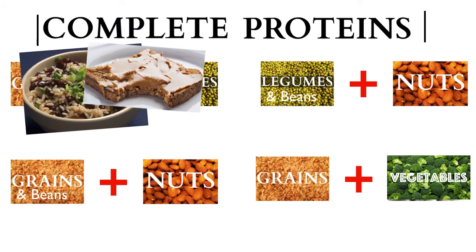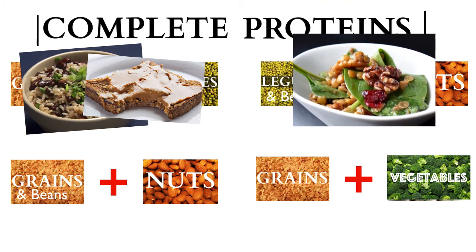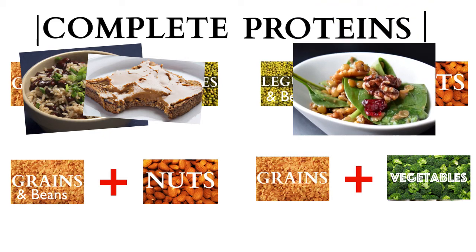Alternatively, a simple peanut butter sandwich will provide both the grains — found in the wheat in the bread — and the legumes, which is what peanuts are. So there you have a complete protein in a peanut butter sandwich. Legumes can also be combined with nuts, for example in a salad that includes walnuts as well as some sort of split pea or other type of legume.